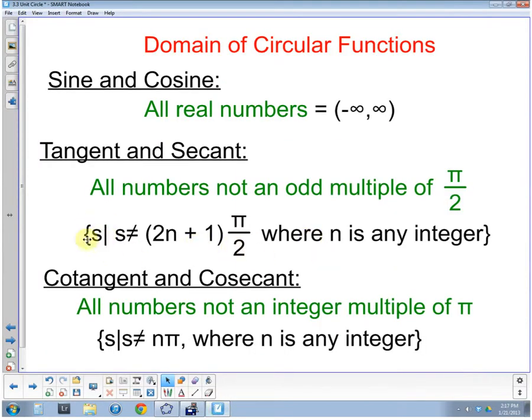Mathematically, if we write this, all values s such that s is not equal to two plus one, two n plus one, that's two times some number, any integer, plus one, the plus one makes this odd times pi halves. So any odd integer, any odd multiple pi halves is not going to work.